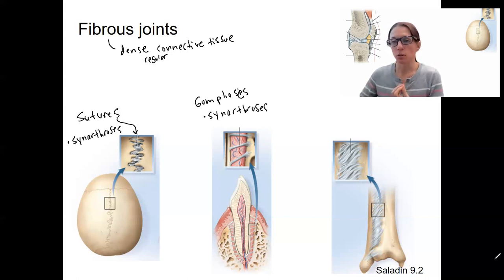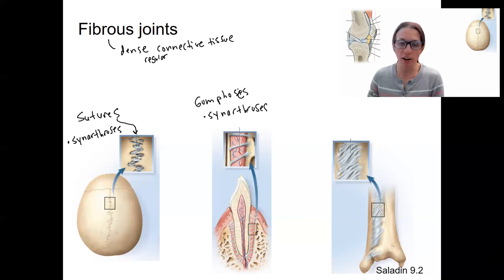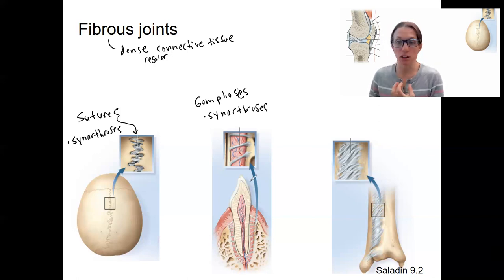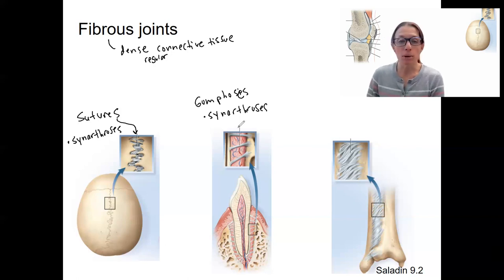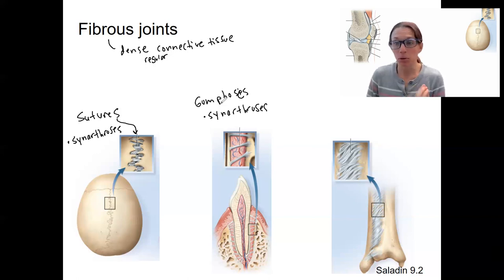Gomphoses anchor the tooth into the socket. There are times in development when these fibers get broken down and teeth fall out — in young children, that's a normal process of losing baby teeth. Other than that, you want these fibers to stay in place and hold on to the tooth. A memory trick: 'nom nom' or 'gum' can help you remember gomphoses.